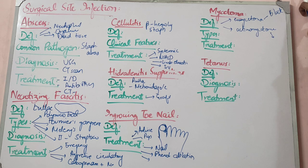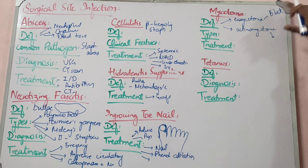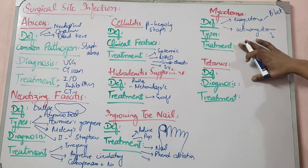The scenario is a swollen neck with multiple discharging sinuses. The diagnosis is mycetoma. The bacterial and fungal types have different colors of discharge — yellow or green. Treatment: identify if it is bacterial or fungal — do culture and sensitivity because treatment is very different.